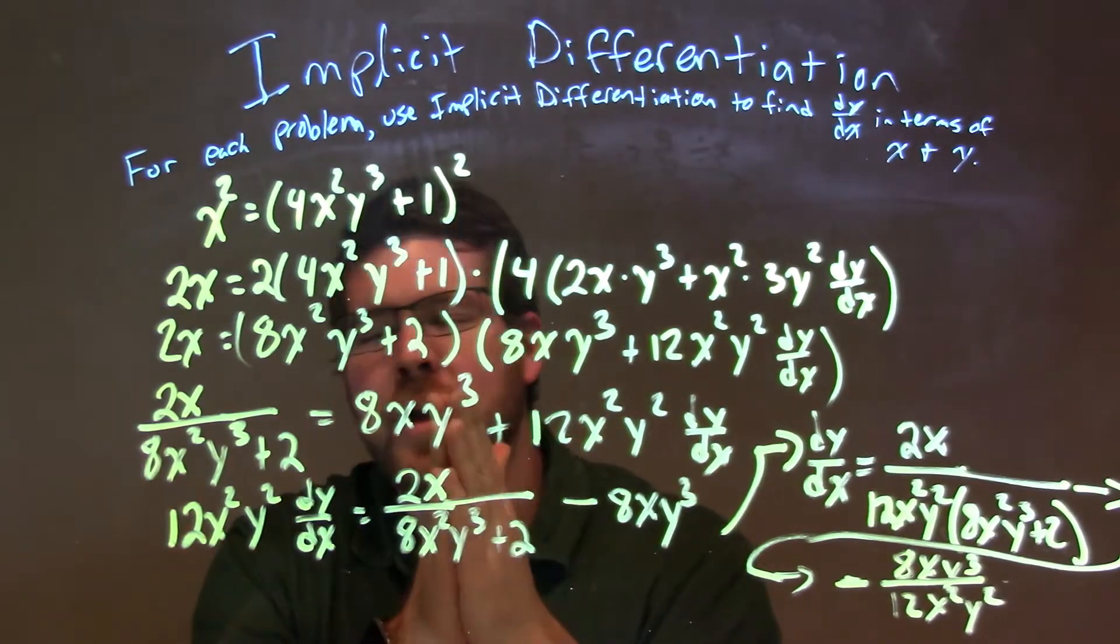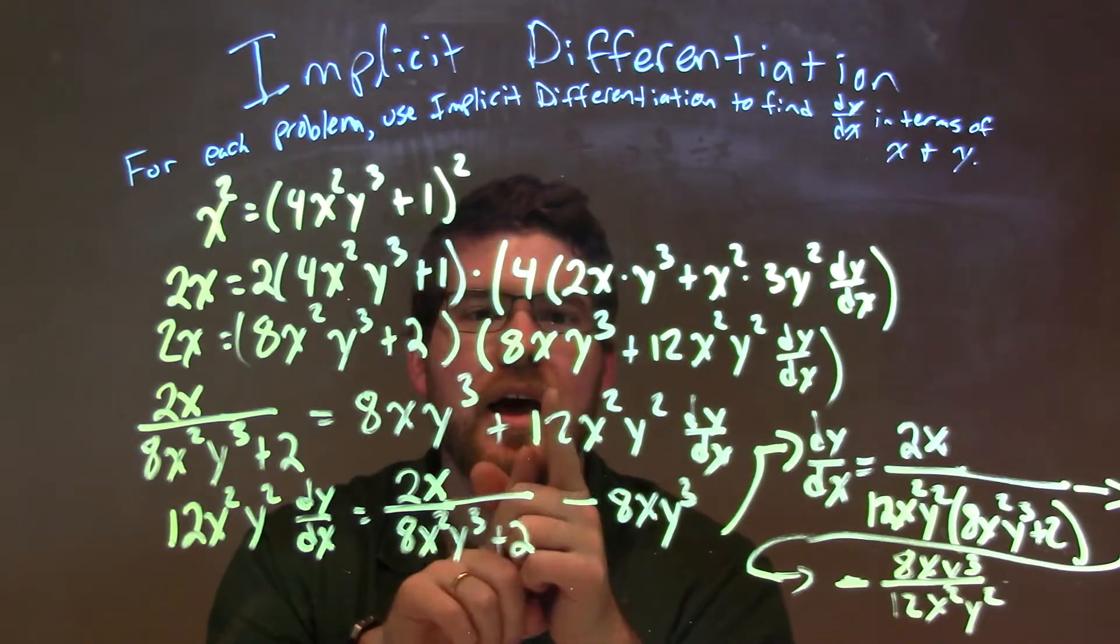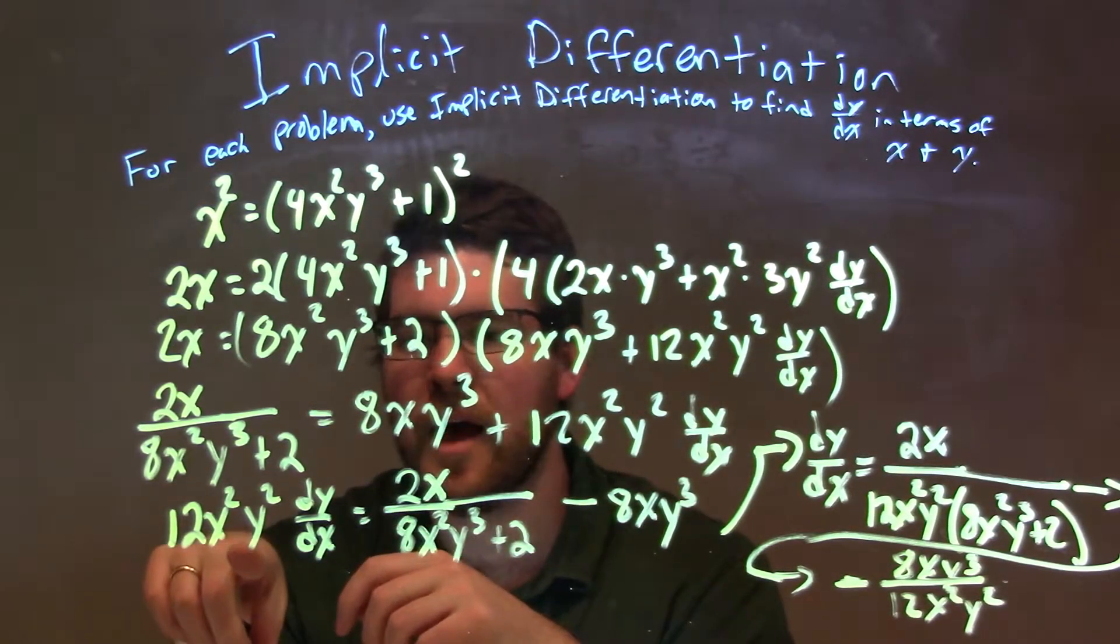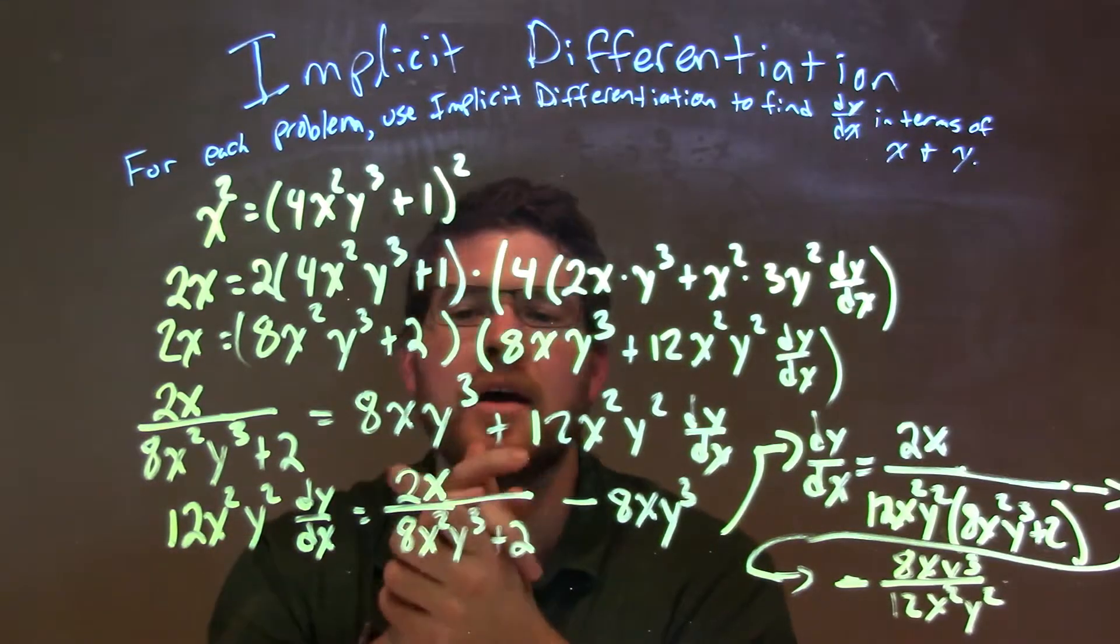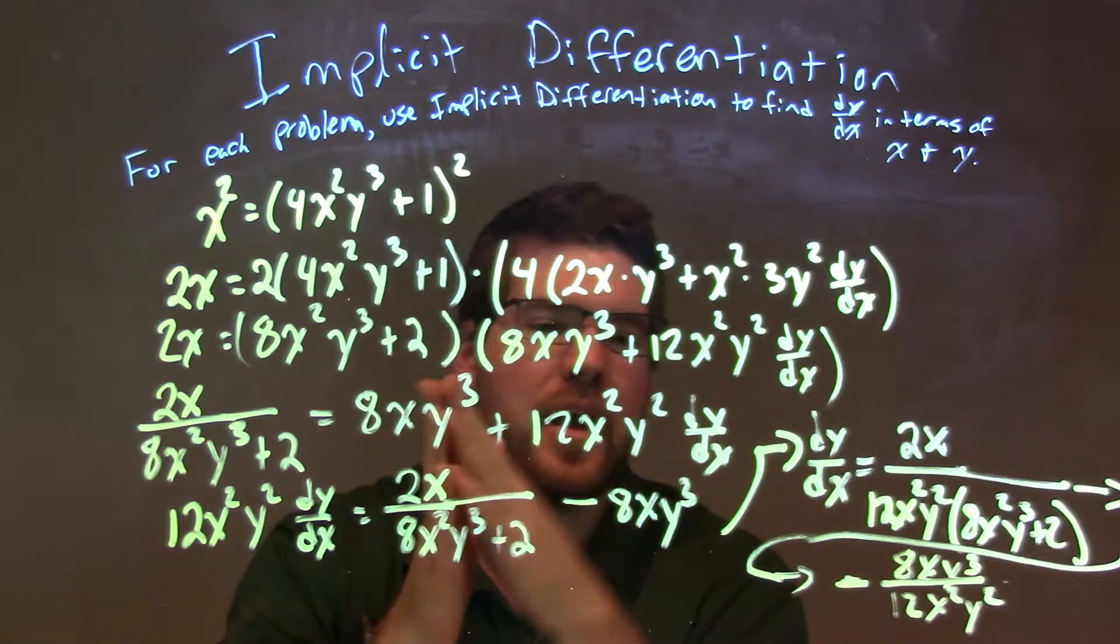Then I divided both sides by 8x squared y to the third plus 2. Then I subtracted 8xy to the third from both sides, but also flipped it, so I have 12x squared y squared dy/dx here, and it equals that 2x over 8x squared y to the third plus 2, minus 8xy to the third.